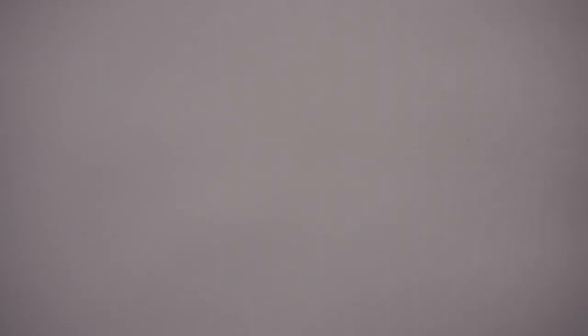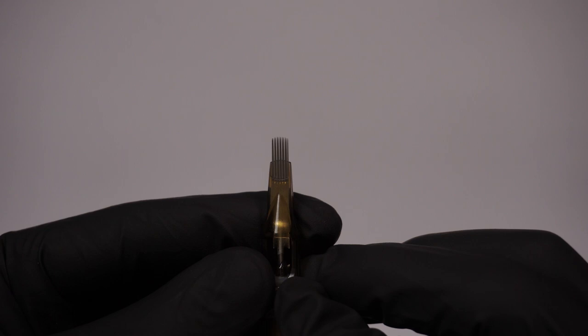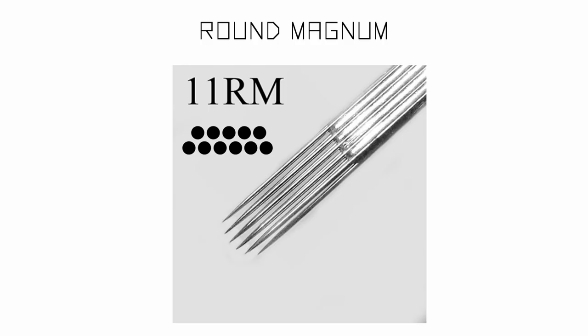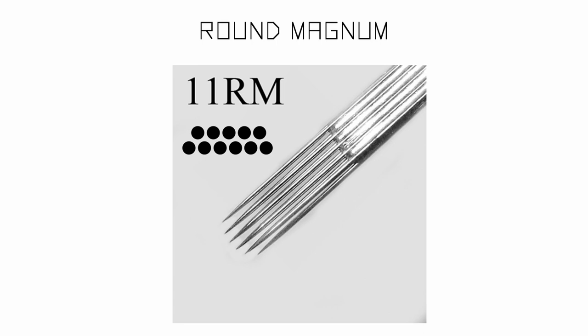Next we have the round magnum, or soft edge, abbreviated RM or SE. This needle is similar to a magnum, with the main difference being that the needle tips in the centre are longer than the tips on the edges, thus forming a rounded edge. Round mags are ideal for smooth black and grey shading but can also be used for packing.